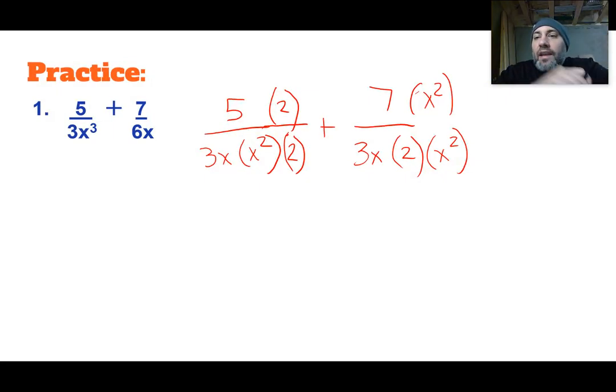So we can just add the numerators across. So let's go ahead and do that. So it would be the 7x². I'm going to write that part first. So 7x², and then it's going to be plus 5 times 2 is 10. So there's your numerator. We can't do anything else with that.